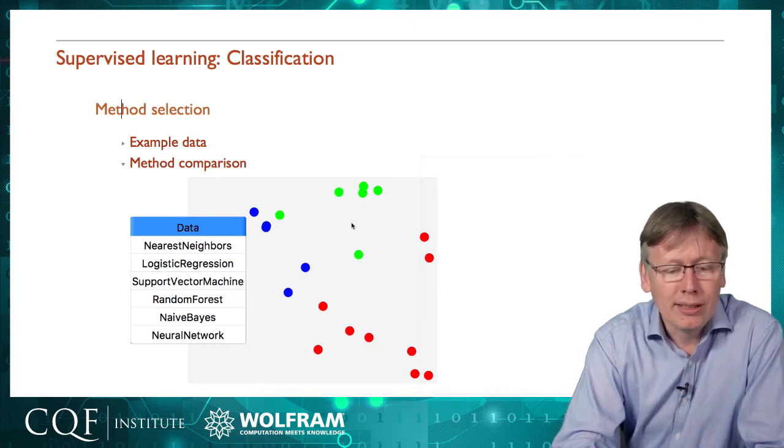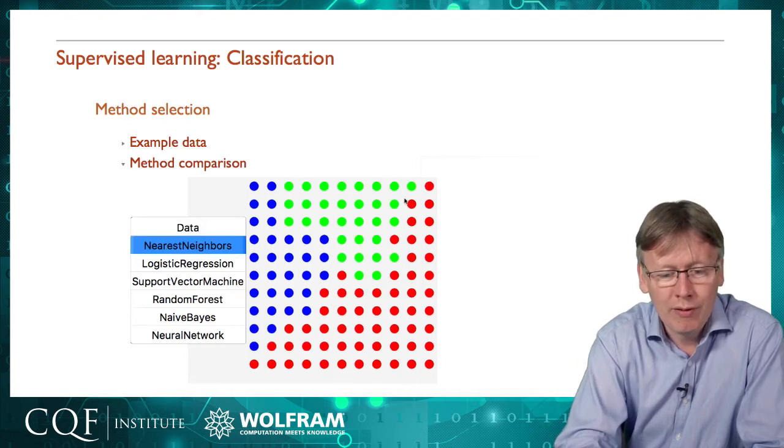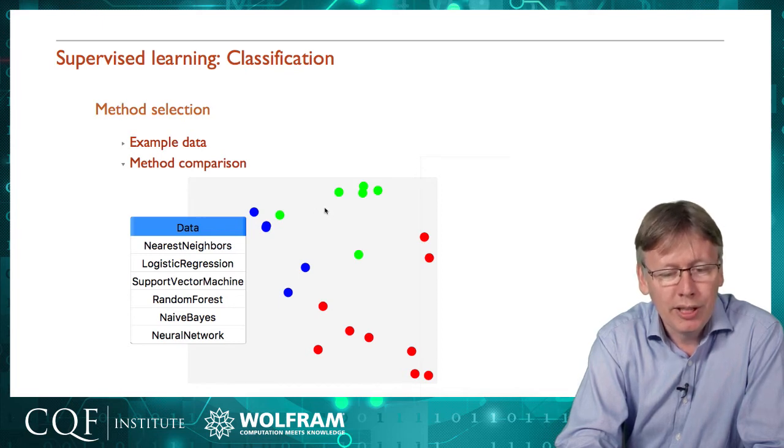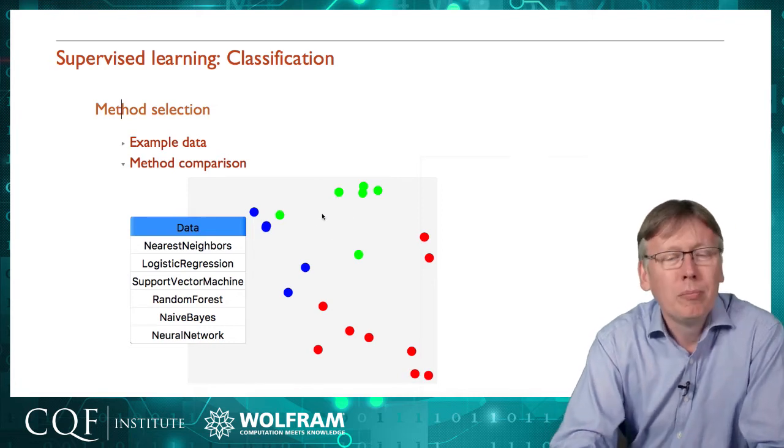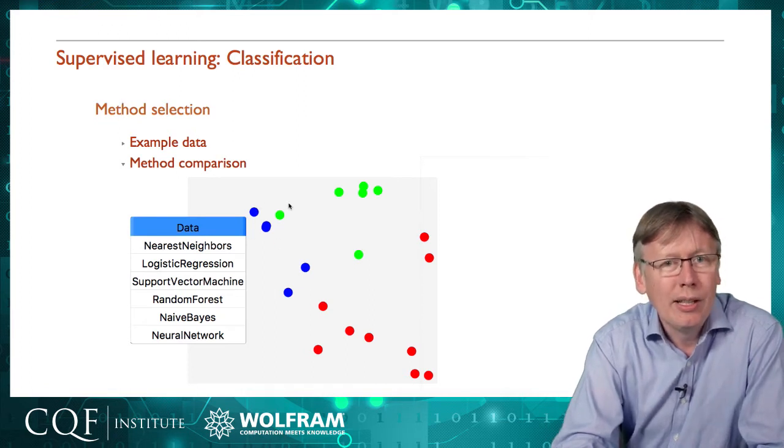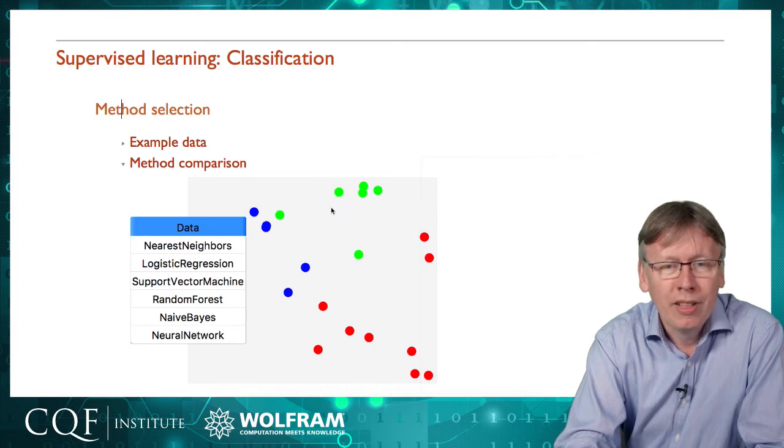Perhaps the simplest and most robust is the nearest neighbor method. Here's the predictions it makes. The basic way nearest neighbors works: if I choose a point and want to make a prediction, it looks for the nearest neighbor to that point. For this point here, the nearest neighbor is a green point, so it's probably green. There are more sophisticated variations where you look at a whole collection of nearest neighbors and infer something from the collection.